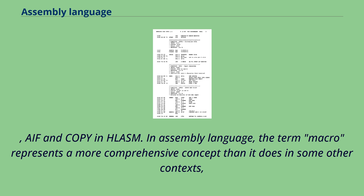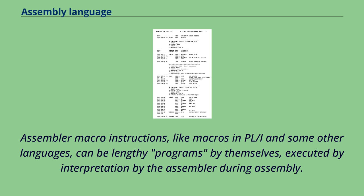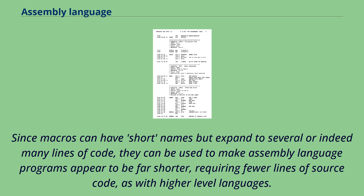In assembly language, the term macro represents a more comprehensive concept than it does in some other contexts, such as the preprocessor in the C programming language, where its #define directive typically is used to create short single-line macros. Assembler macro instructions, like macros in PL/I and some other languages, can be lengthy programs by themselves, executed by interpretation by the assembler during assembly. Since macros can have short names but expand to several or indeed many lines of code, they can be used to make assembly language programs appear to be far shorter, requiring fewer lines of source code, as with higher-level languages.